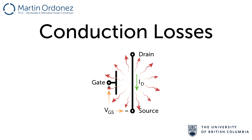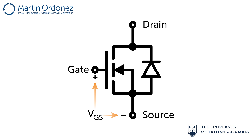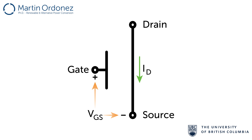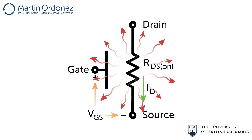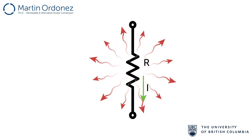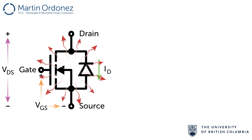Let us start with conduction losses. Whenever the MOSFET is on, the path between drain and source is actually a resistance called RDS_on. Therefore, conduction losses can be determined in the same way as power dissipation in any resistor. That is, power is equal to the RMS current squared times the resistance. In the case of the MOSFET, that gives conduction losses equal to ID_RMS squared times RDS_on.